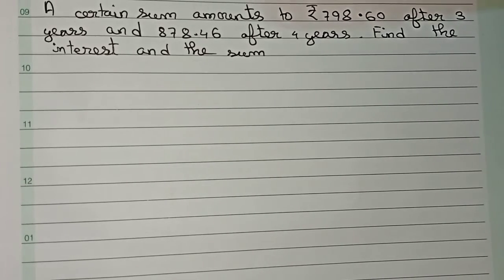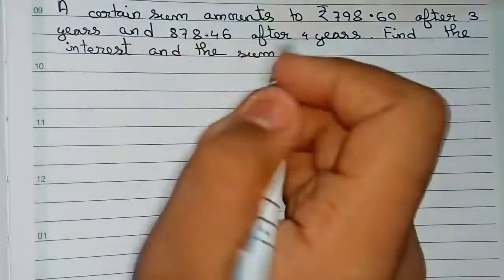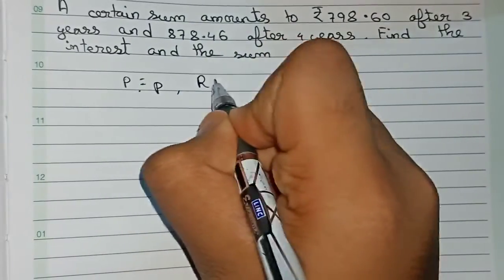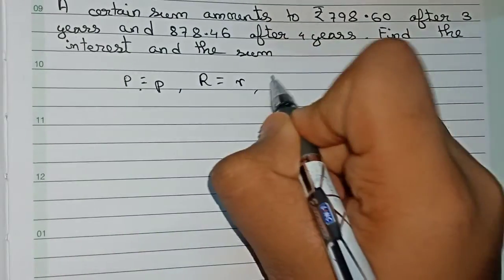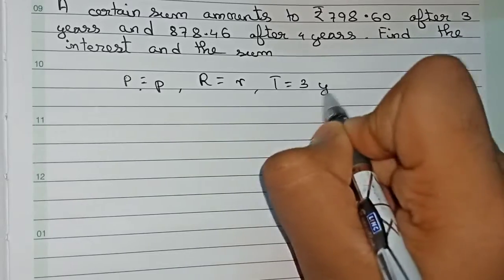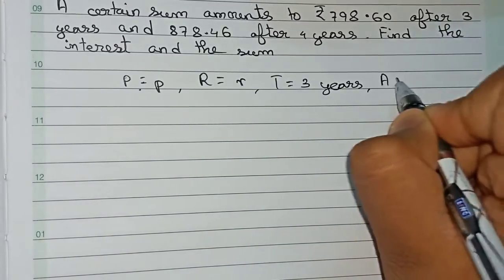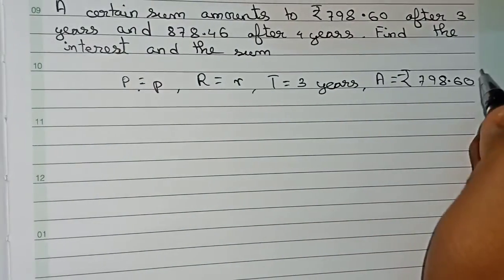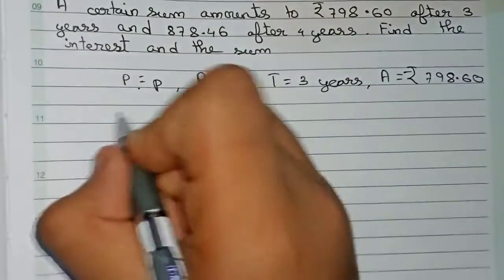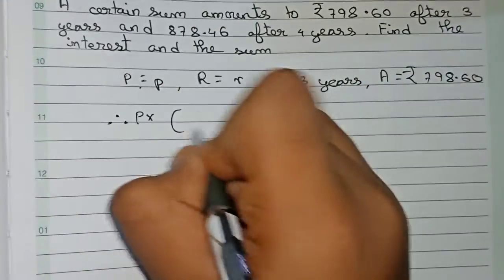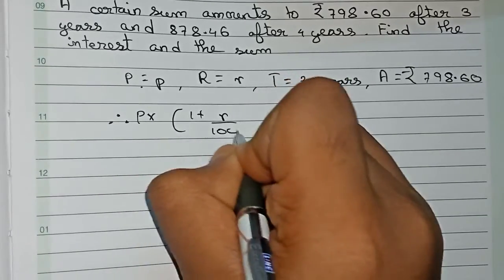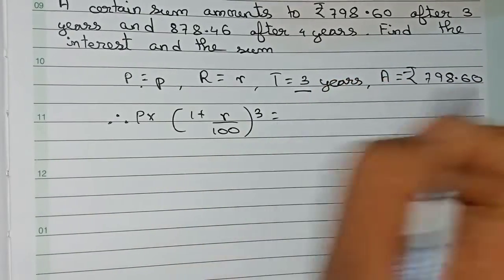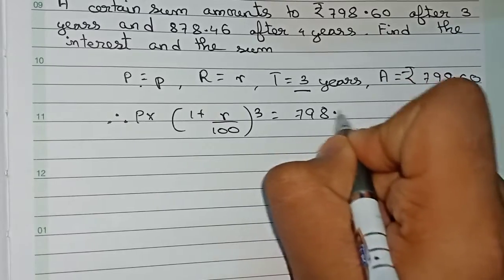For this question, we solve it using two equations. For the first equation, principle is P, rate of interest is r, time is three years, and the amount is rupees 798.60. The formula is: Principal into 1 plus rate by 100, to the power n, where n is the time.